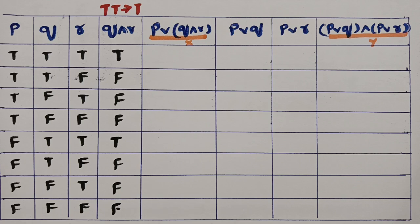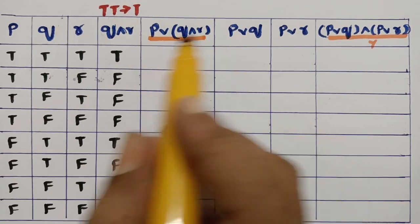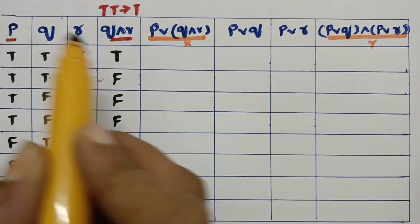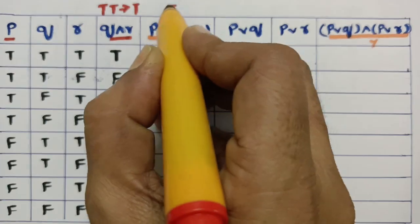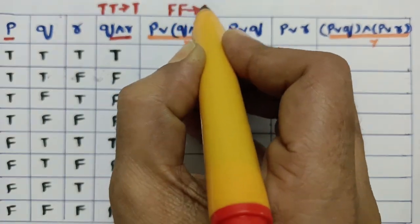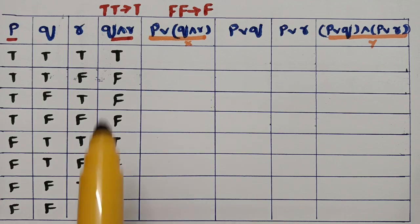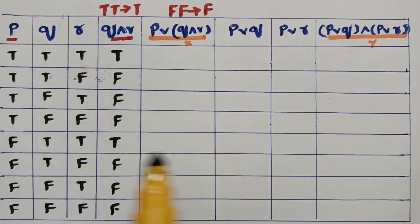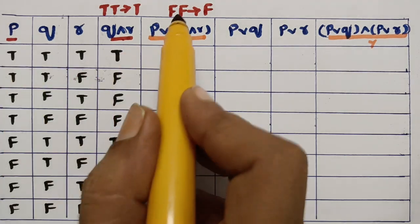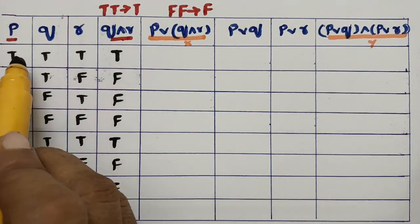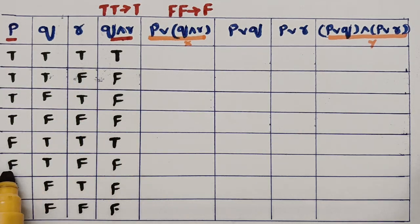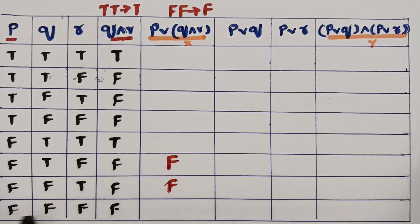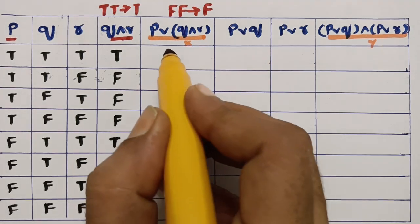Now compute p or (q and r) using disjunction. The logic for 'or' is: if both values are false, write false; otherwise write true. Comparing p with the q-and-r column, we find three rows where both are false, so those get false, and the remaining rows are all true.